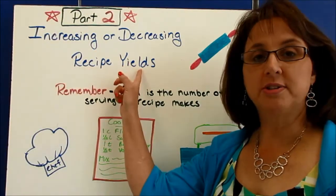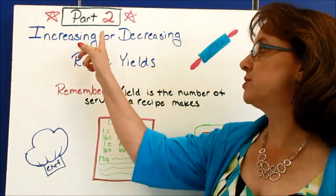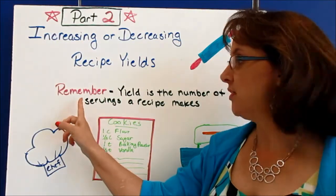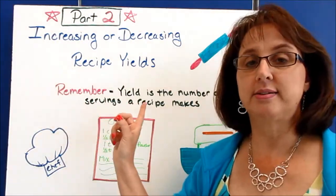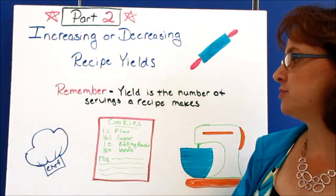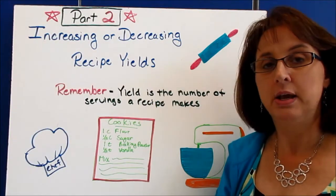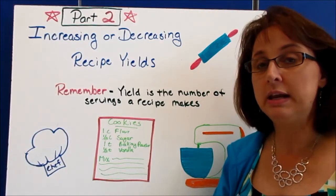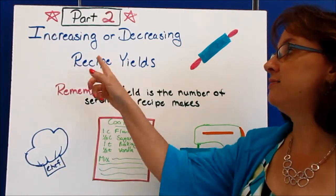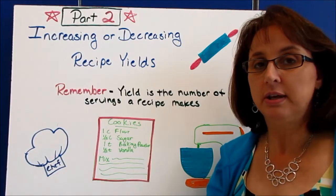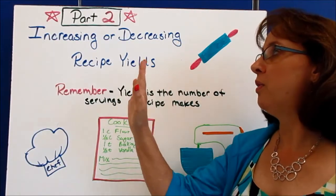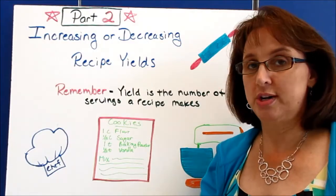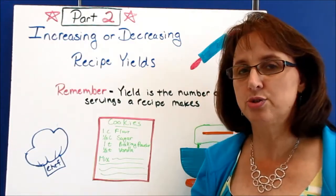Increasing or decreasing recipe yields, part two. In the previous video we said that a yield is the number of servings that a recipe makes. When our recipe makes more or less than we actually need, then we have to increase or decrease the yield. In the last video we increased the yield, and so this time we're going to decrease because it's a little bit trickier.